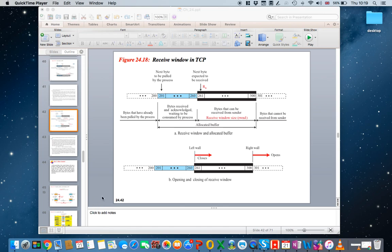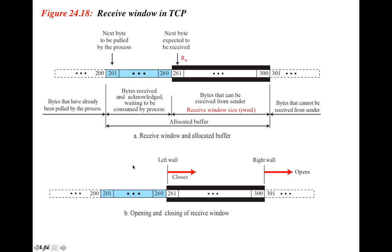Bismillah ar-Rahman ar-Rahim. Flow control in TCP. In TCP, we have to make sure that the sender and the receiver agree on the amount of data that is going to be transferred. It could be possible that the sender is on a fast network.